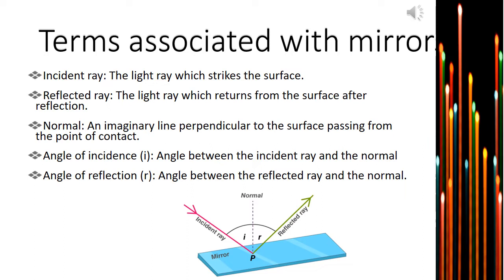This line is perpendicular to the reflecting surface. The angle of incidence is the angle formed between the incident ray — that is the pink ray — and the normal. The angle of reflection is the angle between the green ray, that is the reflected ray, and the normal.